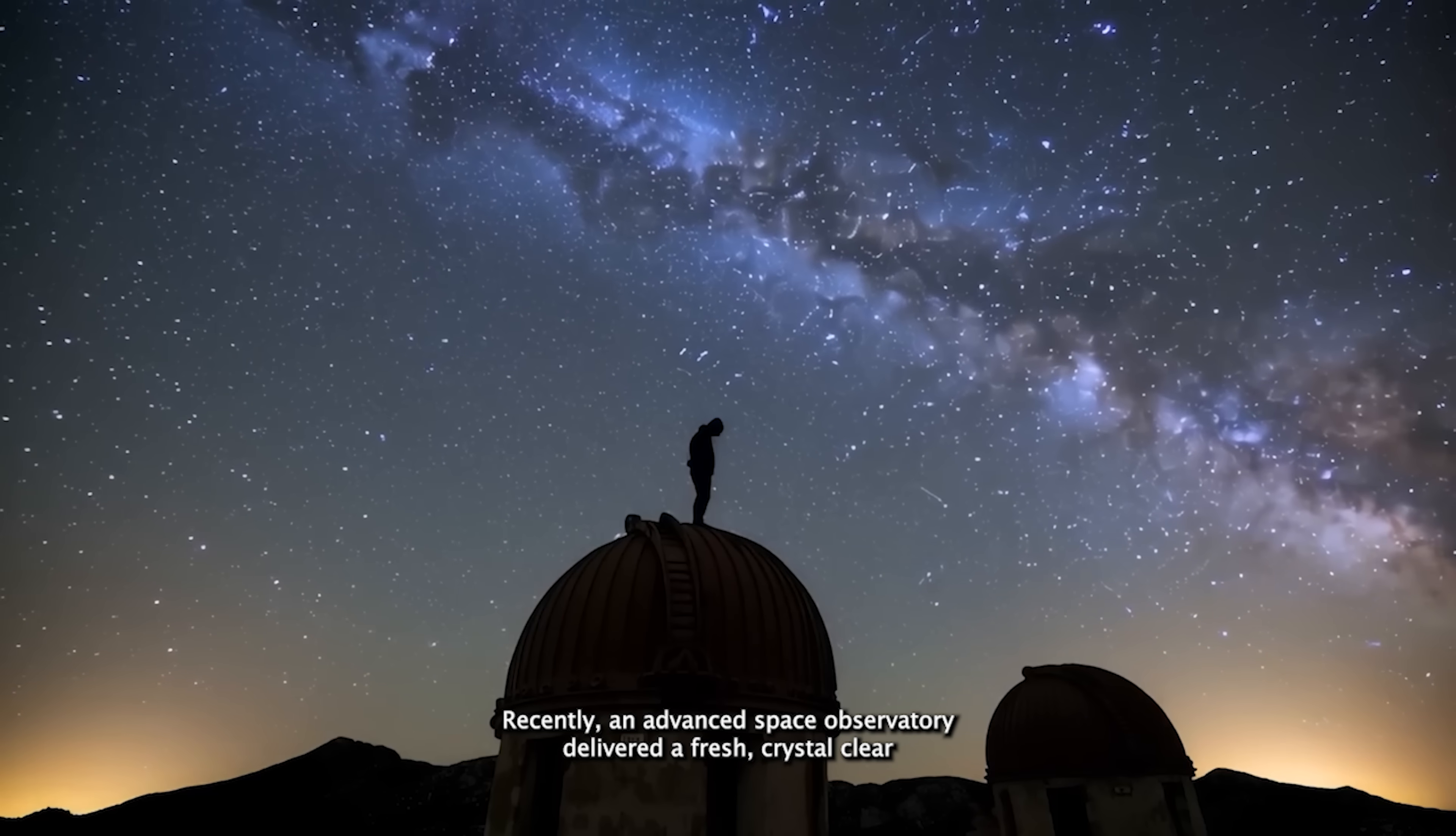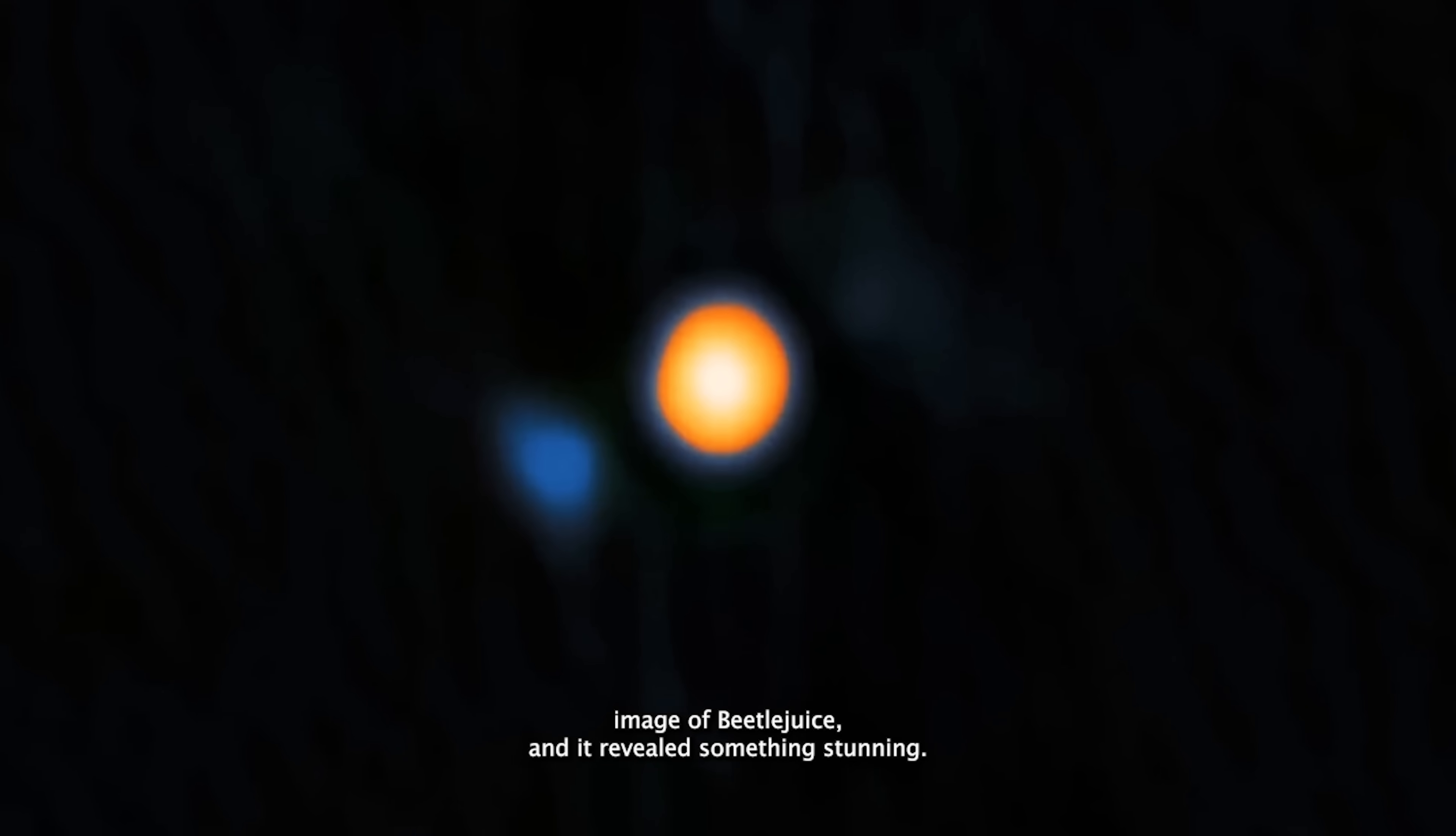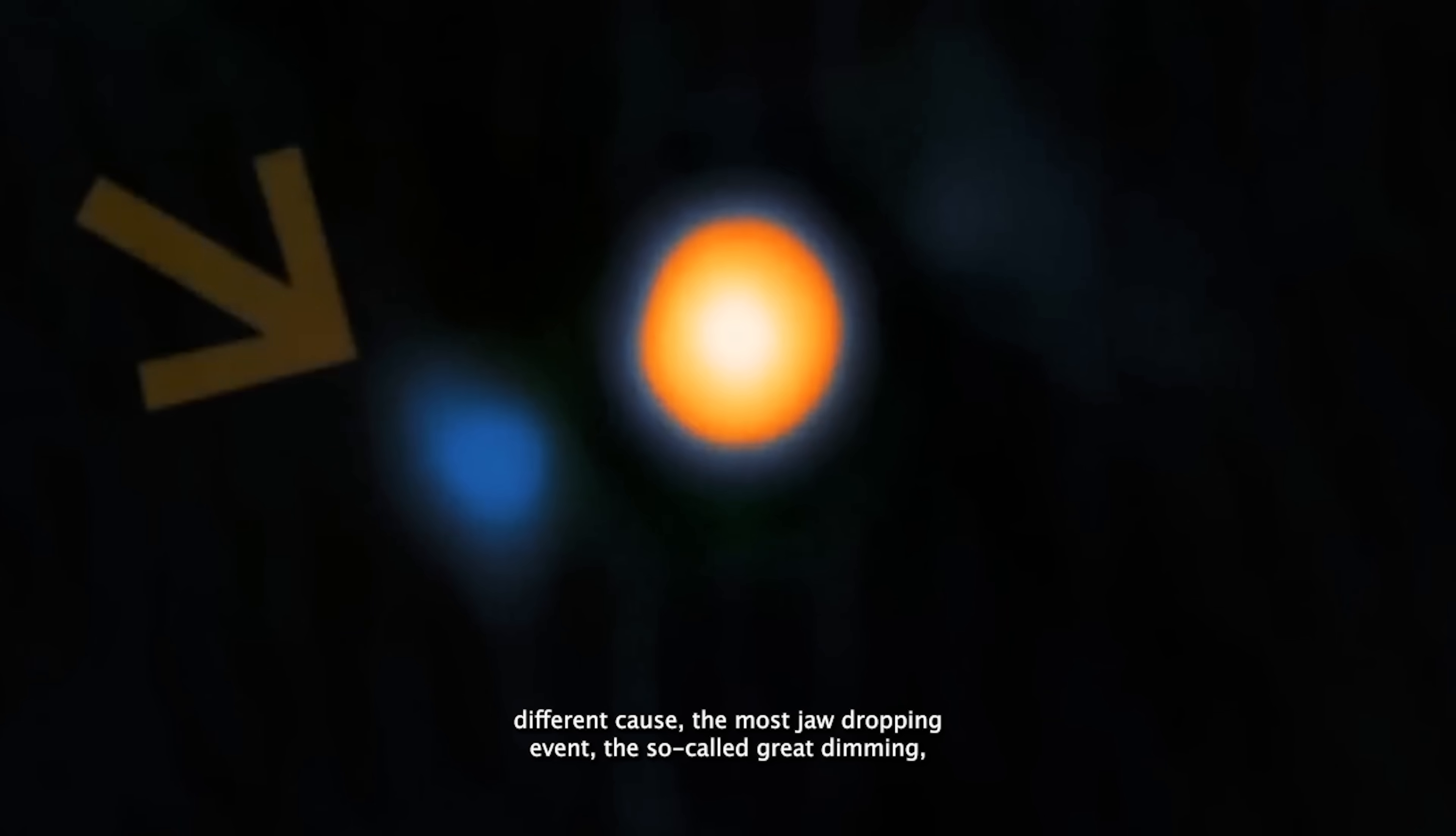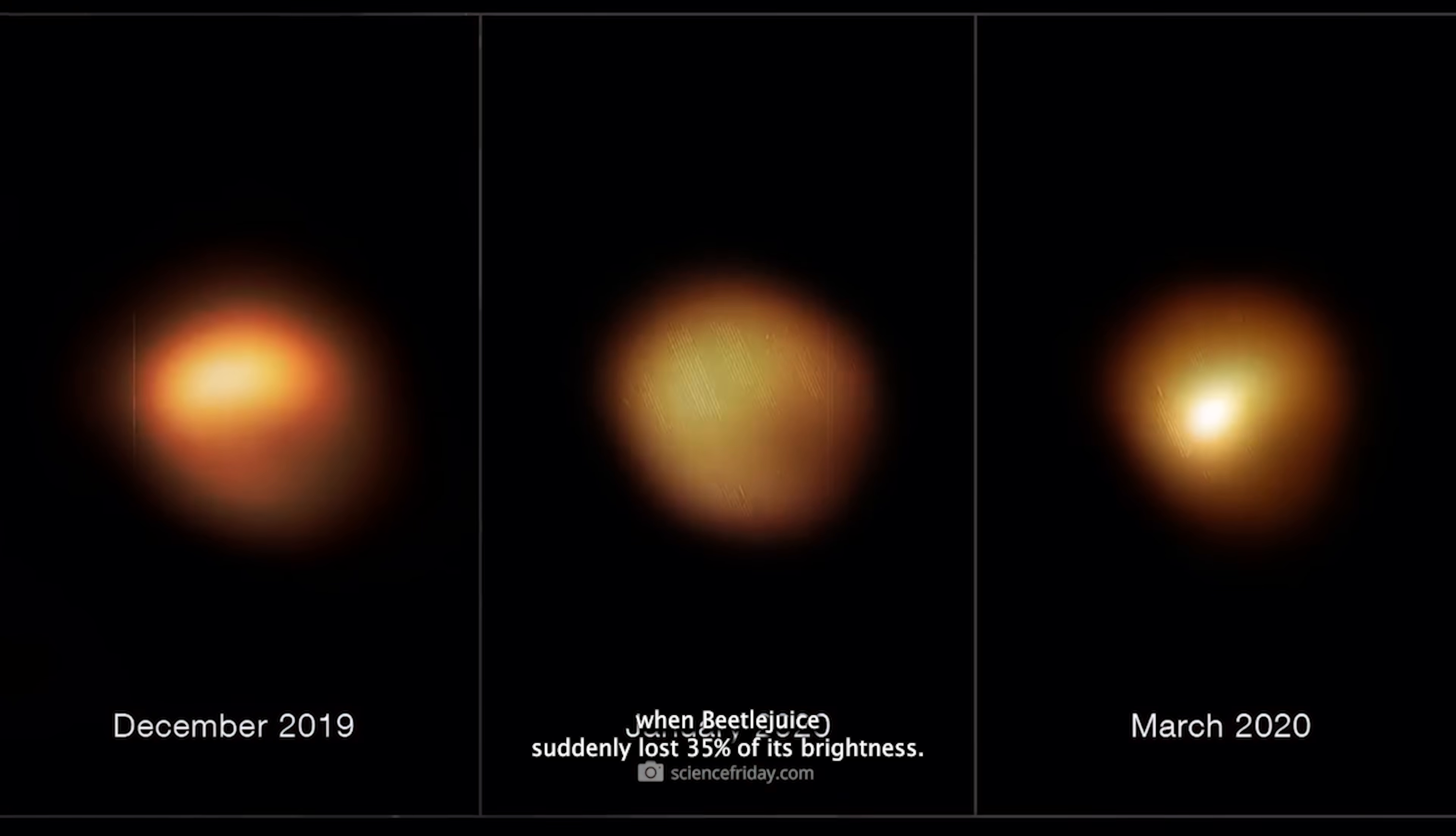Recently, an advanced space observatory delivered a fresh, crystal-clear image of Betelgeuse, and it revealed something stunning. The star has dimmed in three distinct ways, each triggered by a completely different cause. The most jaw-dropping event? The so-called Great Dimming, when Betelgeuse suddenly lost 35% of its brightness.